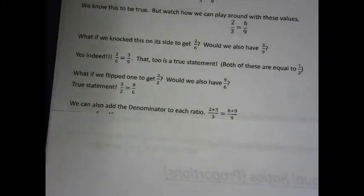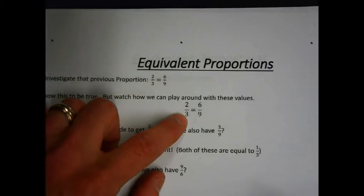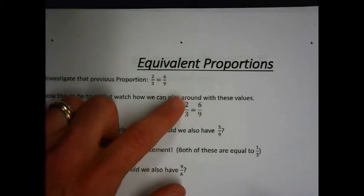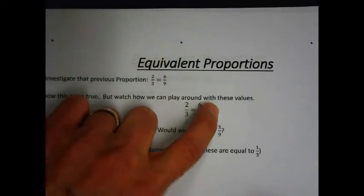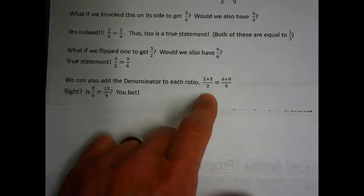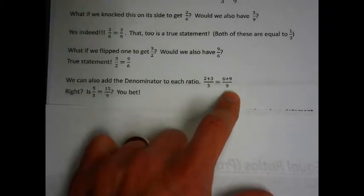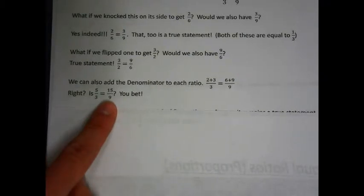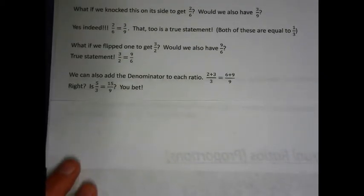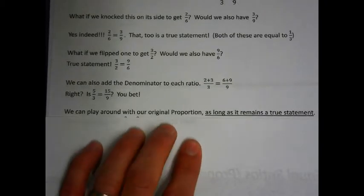We can also add the denominator to each ratio — this is where stuff gets tricky. See our initial ratio: what if we added the denominator to each one? What if we added 3 to the numerator on the first ratio? Can we add 9 to the second ratio and have an equal proportion? The answer is yes. So if we had our 2 thirds and add the denominator, we'd get 5 over 3. And if we had 6 ninths and add the denominator, we'd get 15 over 9. So is 5 over 3 equal to 15 over 9? Yes, indeed it is.